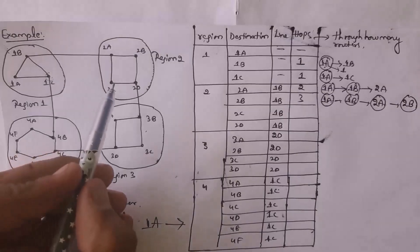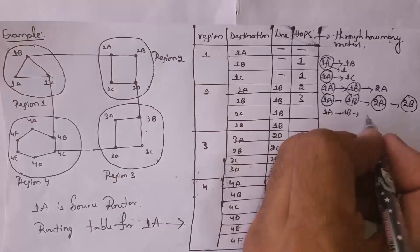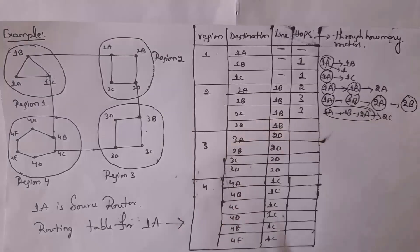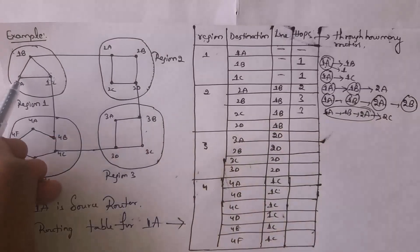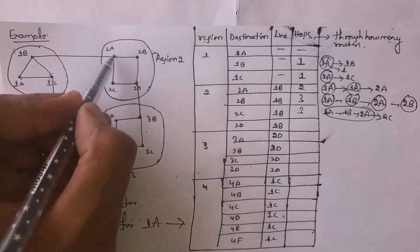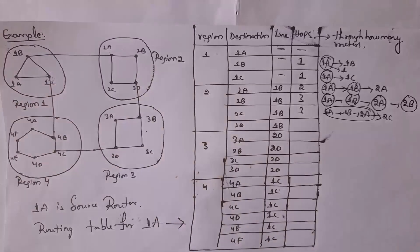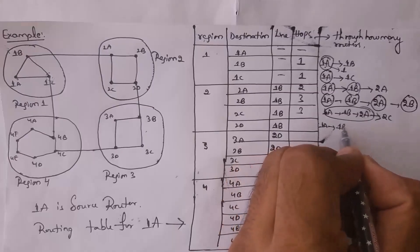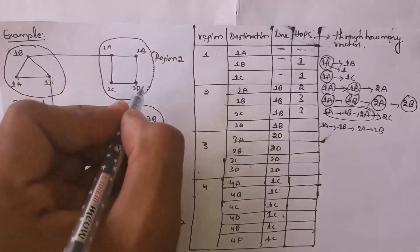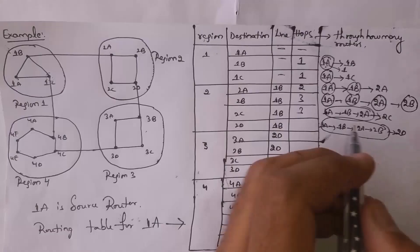For destination 2D: data travels from 1A → 1B → 2A → 2B → 2D, so hop count is 4. For destination 3A: data travels 1A → 1B → 2A → 2B → 2D → 3B → 3A — hop count is 6. For destination 3B: data travels 1A → 1B → 2A → 2B → 2D → 3B — hop count is 5.